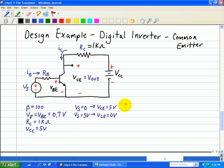And the second condition means that it must be in saturation mode, and we must pick an RB such that it is in saturation mode.